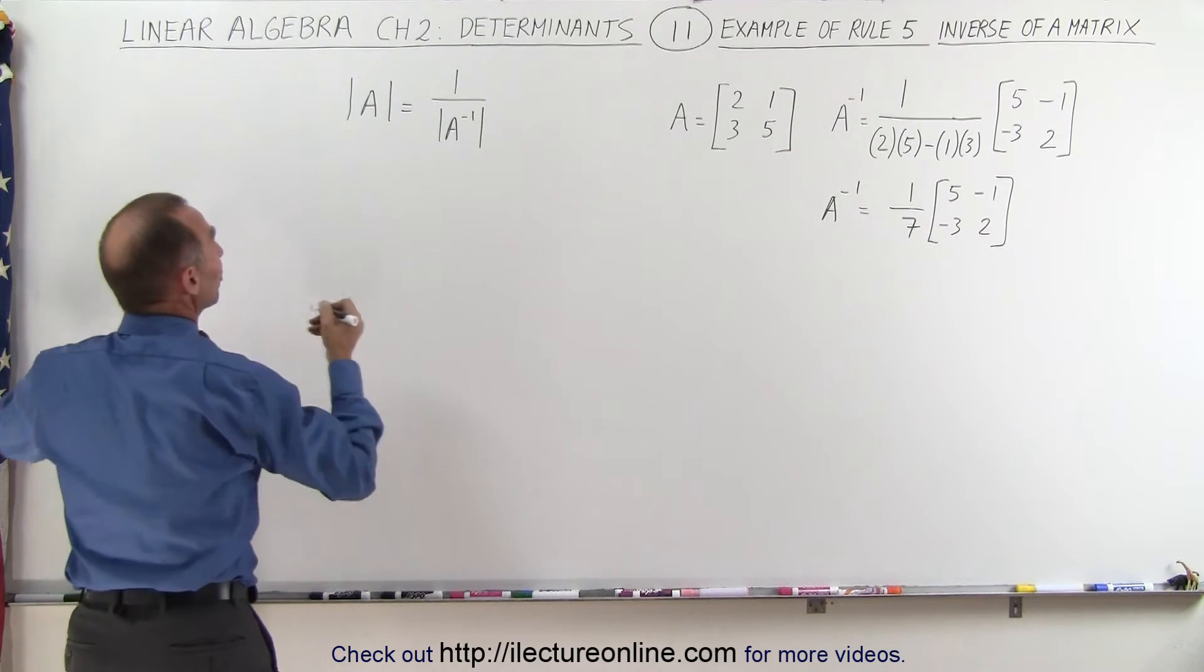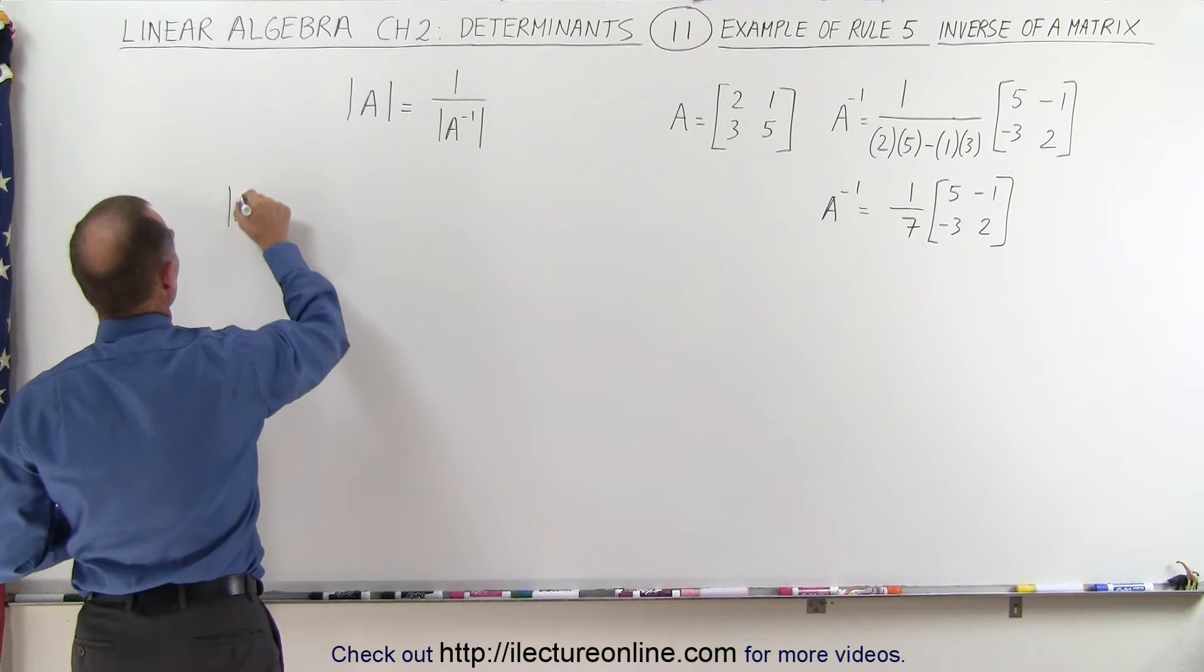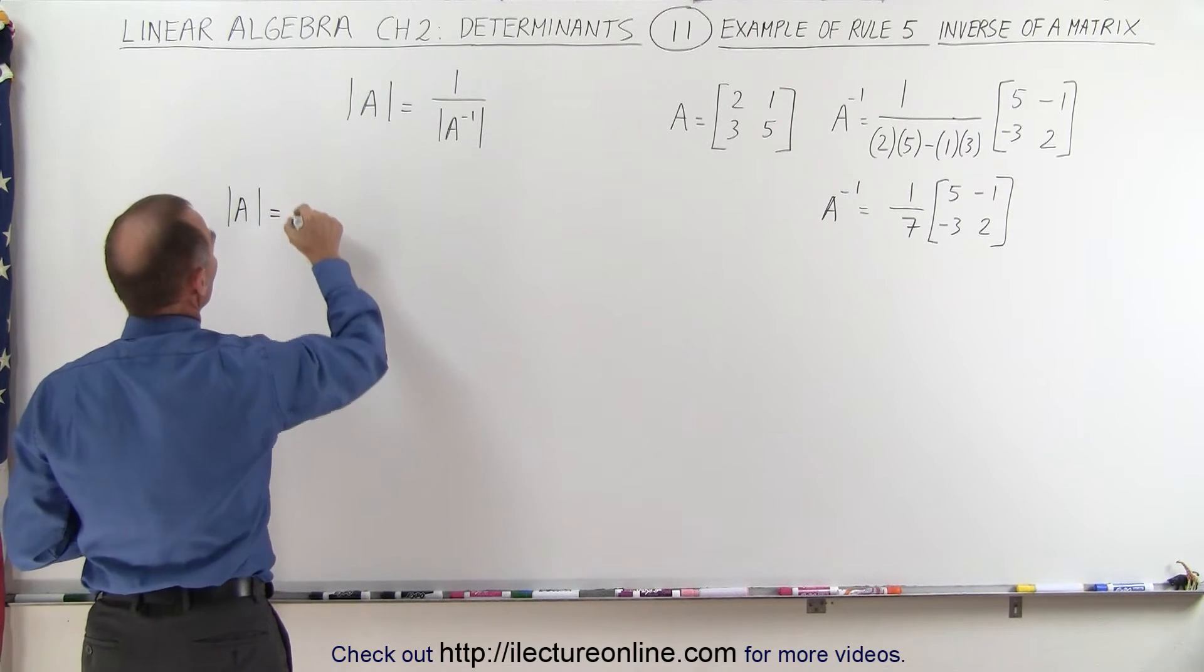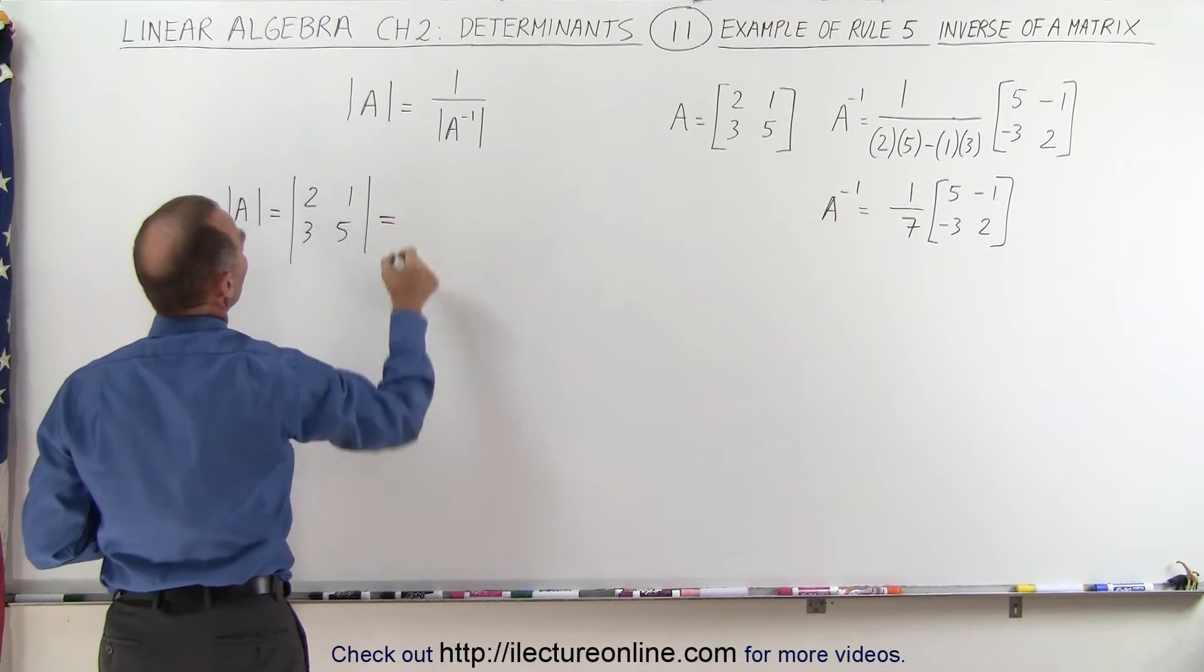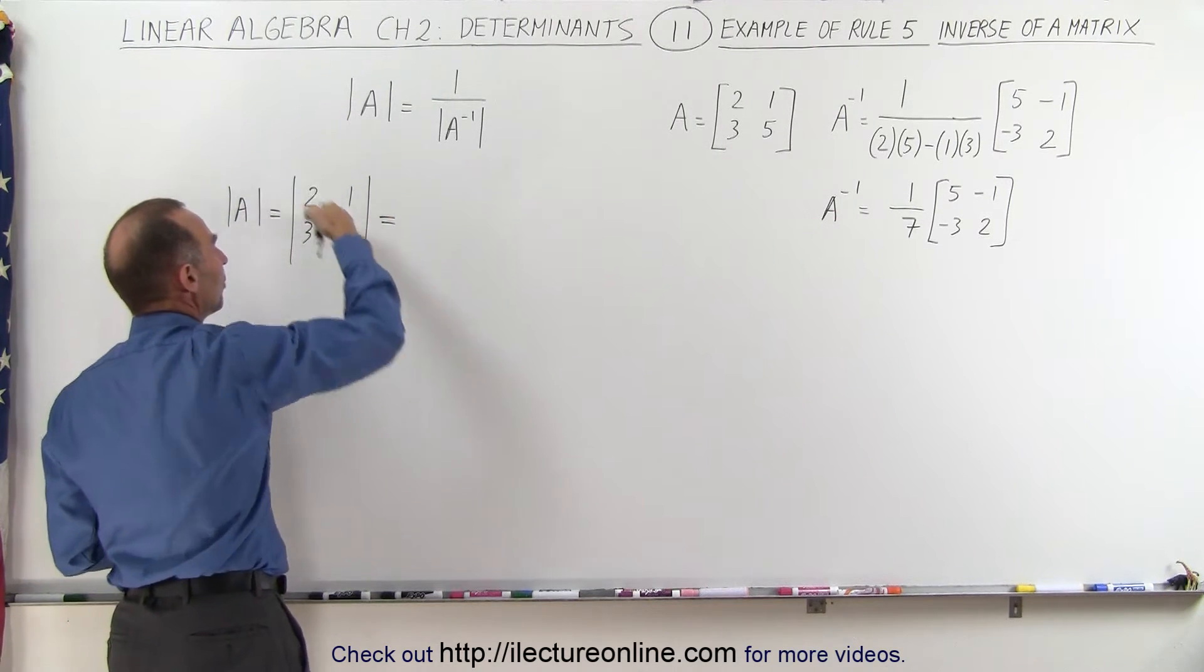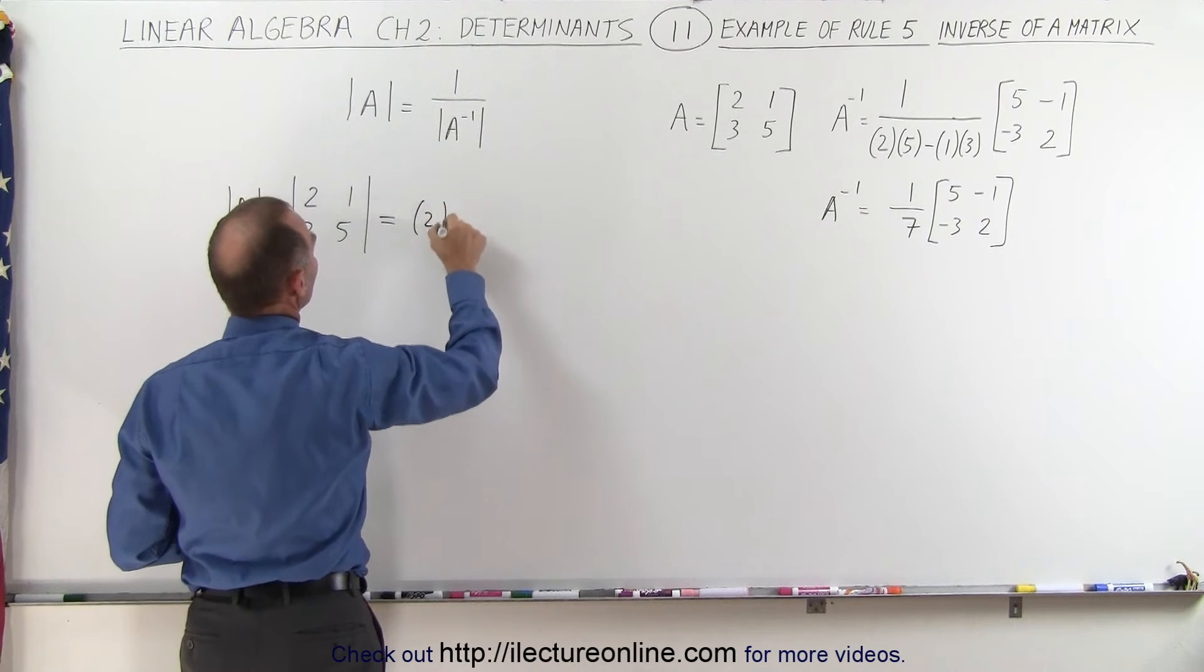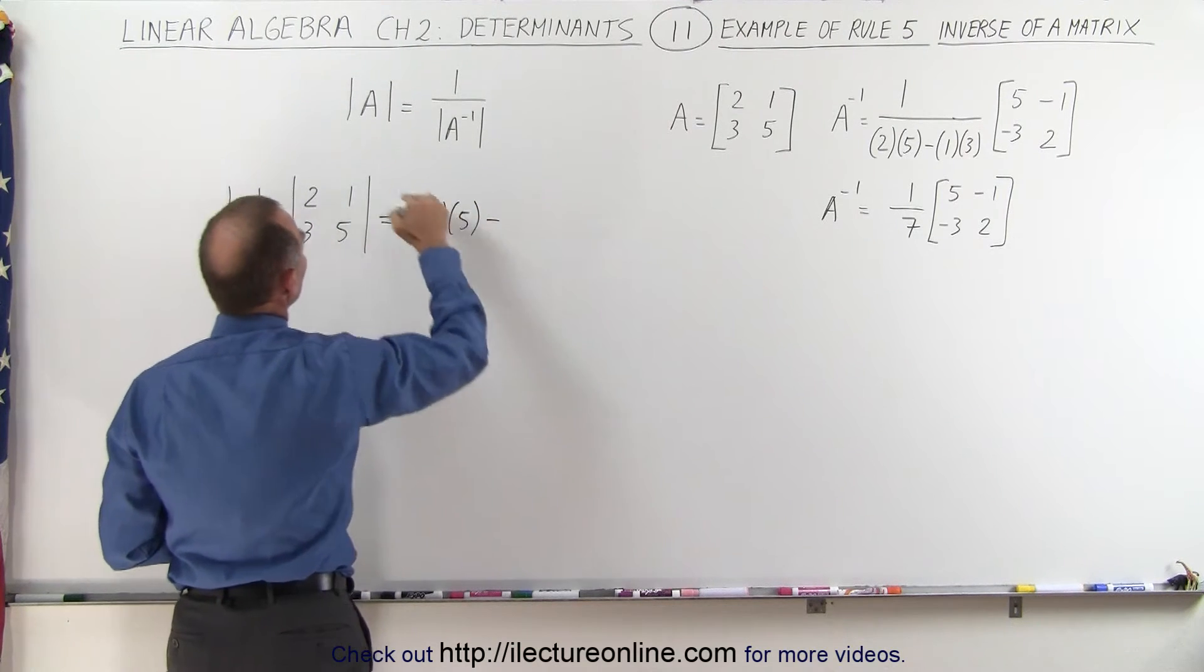Taking the determinant of matrix A looks as follows. The determinant of matrix A is equal to—we get 2, 1, 3, and 5. This is equal to the product of these two diagonals which is 2 times 5 minus the product of these diagonals which is 1 times 3.